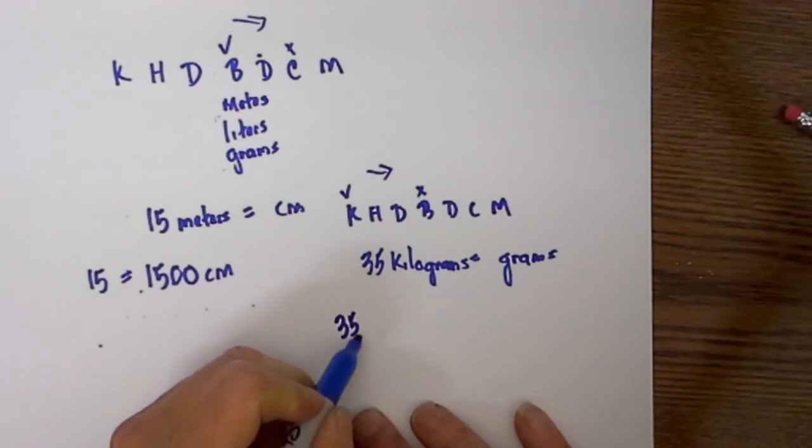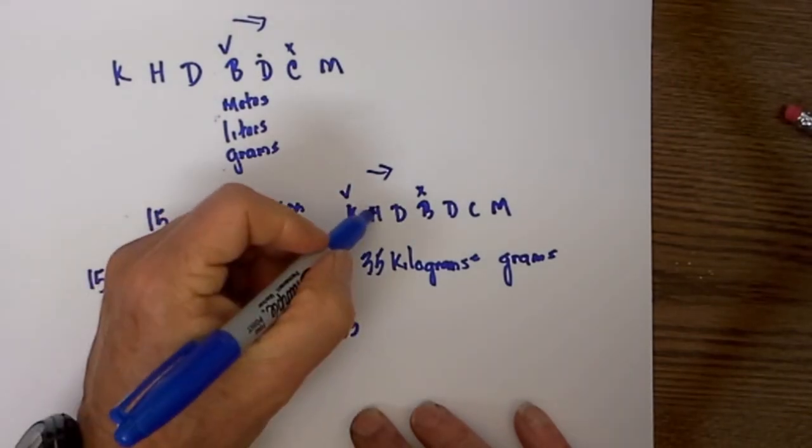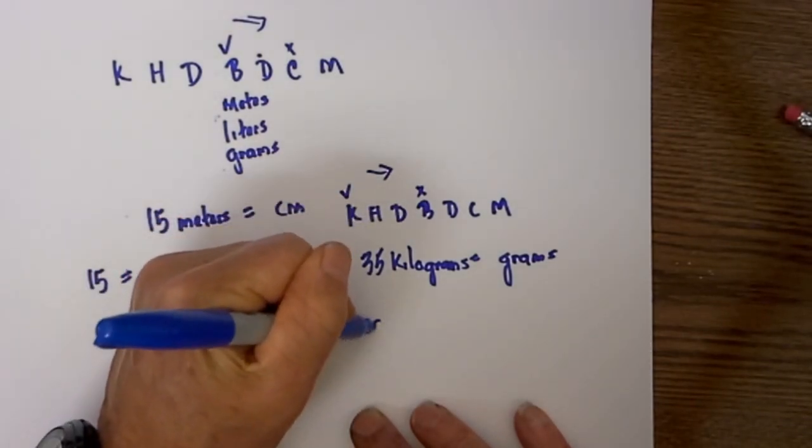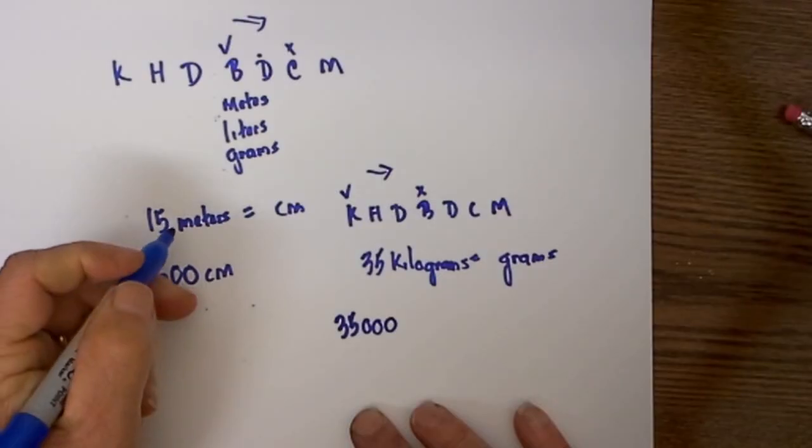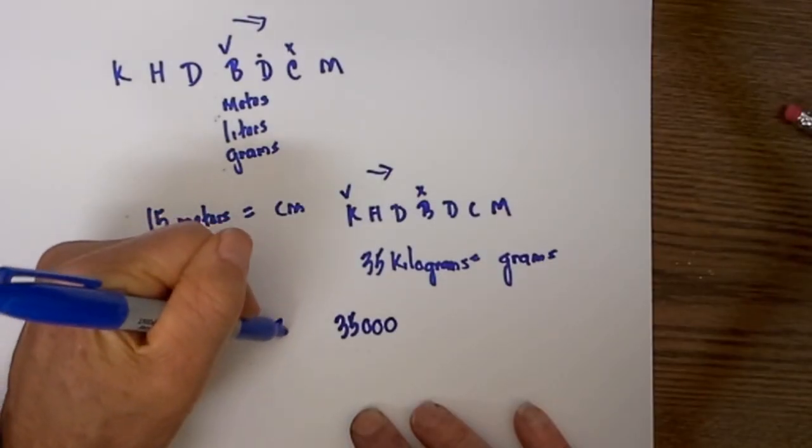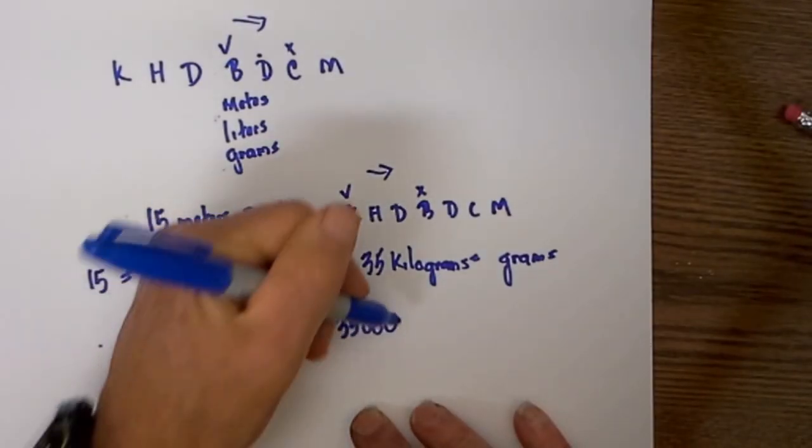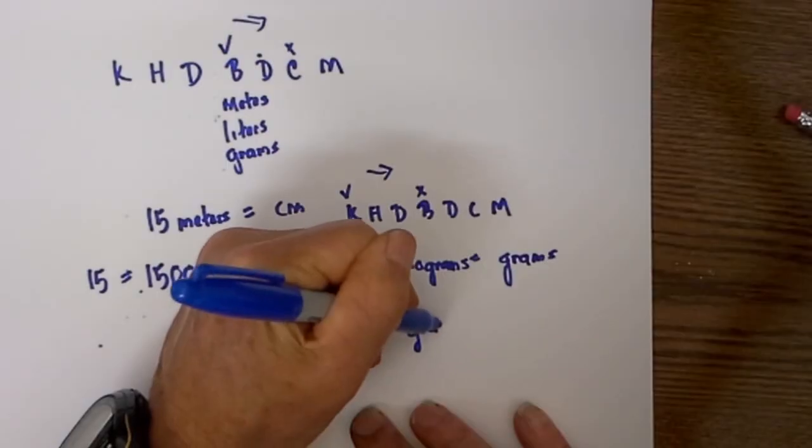I will go 35, remember the decimal place is there so I will go 1, 2, 3. So 35 kilograms is equal to 35,000 grams.